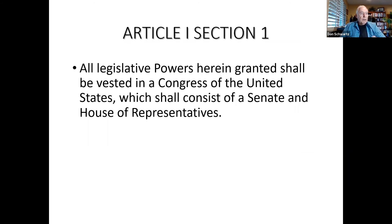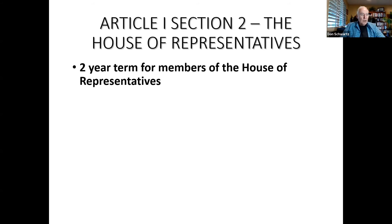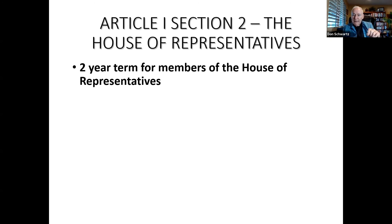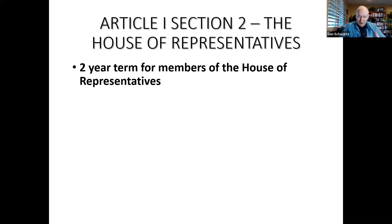Article I, Section 2 is devoted specifically to the House of Representatives. The House was the only part of the new Constitution that would be chosen by the people themselves. The framers determined that representatives should serve for only a two-year term, so that if a representative once elected did not please his constituents, he could be voted out of office in two years.